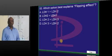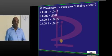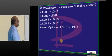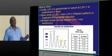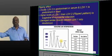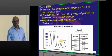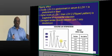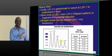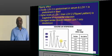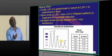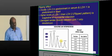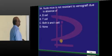What is meant by the flipping effect? Normally LDH2 is predominant in the blood. But if LDH1 is more than LDH2, it is an indication that you are having myocardial infarction, which is called the flipping effect.